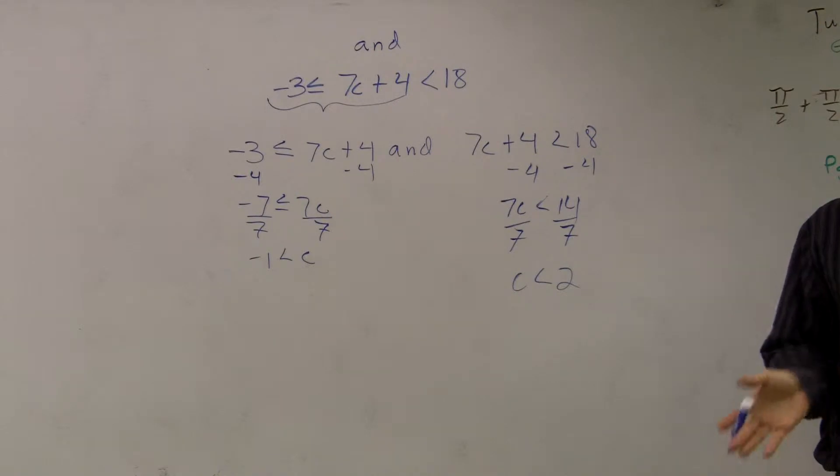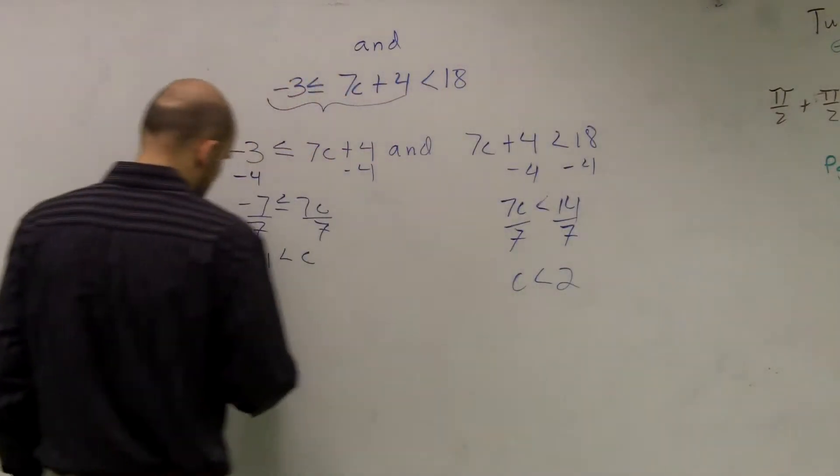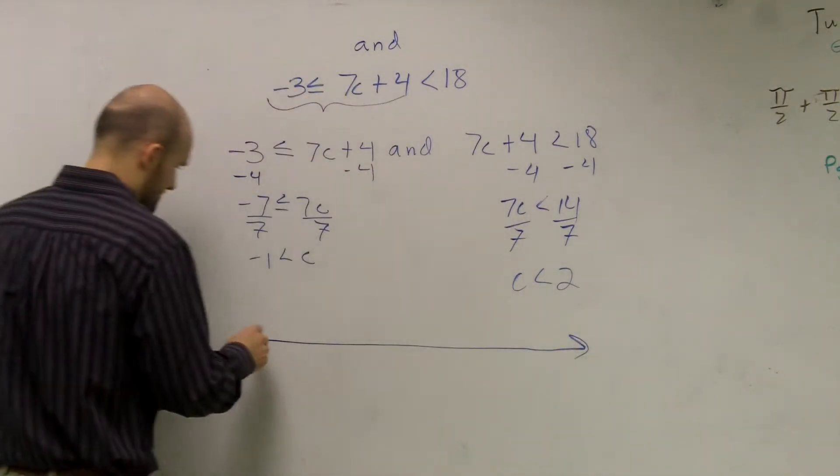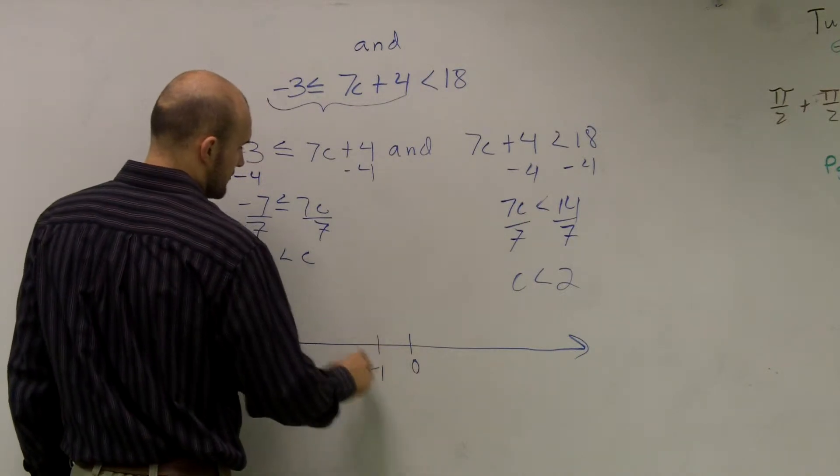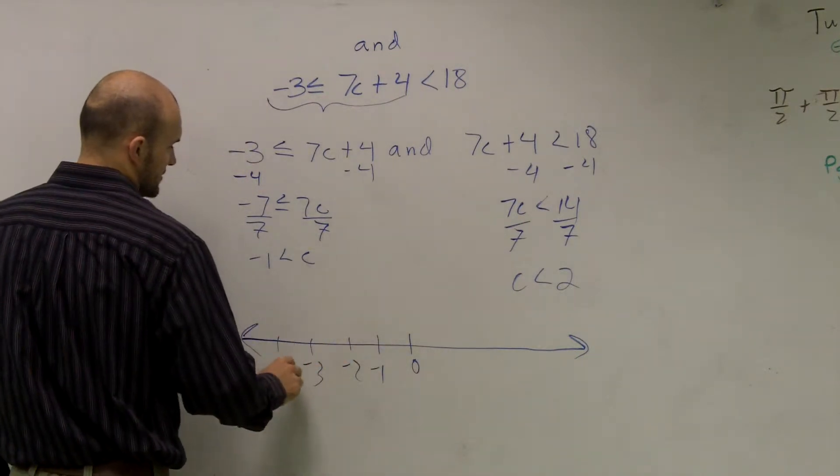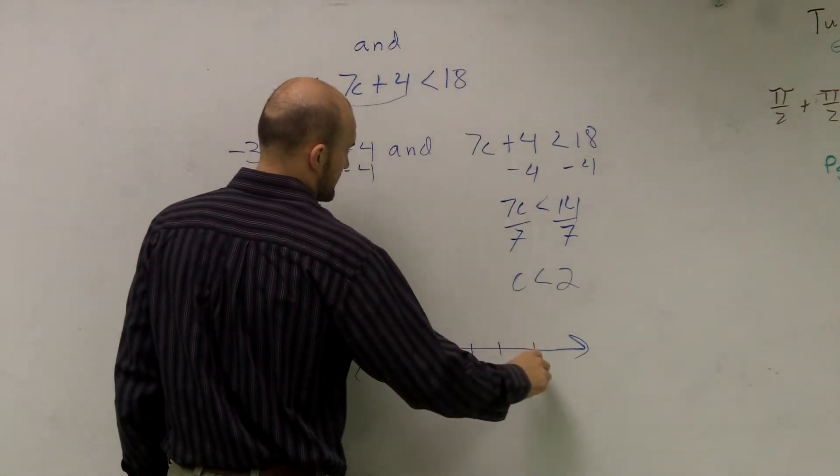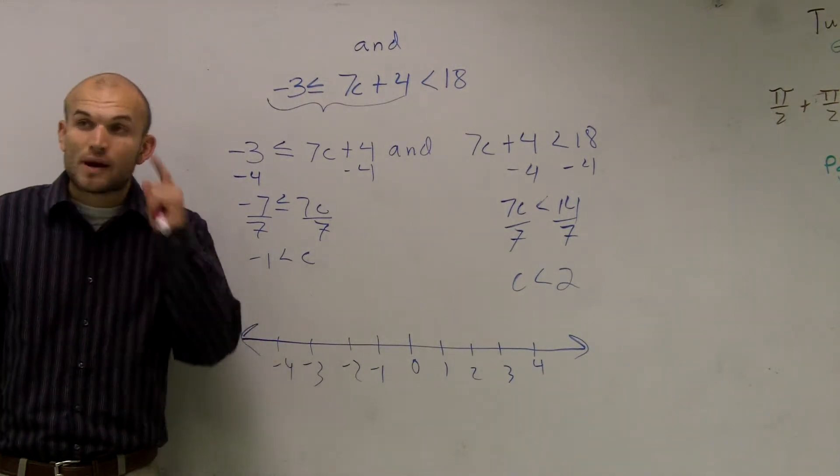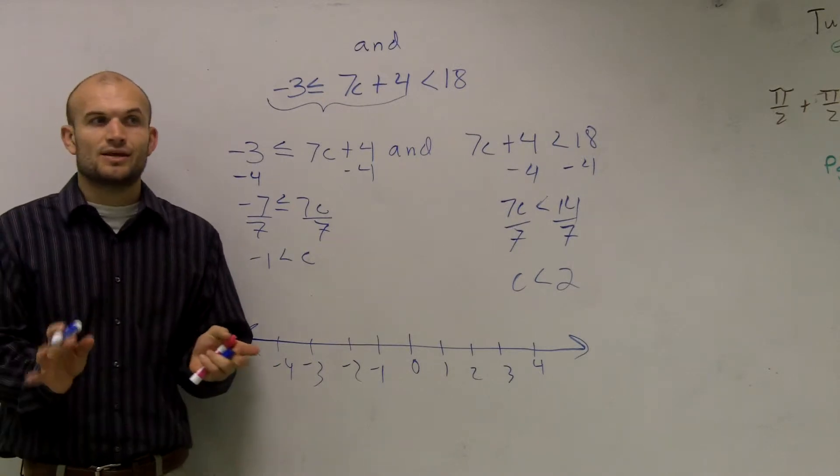Now, remember, it's an 'and,' so we're only going to talk about where they intersect. So let's take a look at it. It's a nice big number line: 0, negative 1, negative 2, negative 3, negative 4, 1, 2, 3, 4. What we want to do is I'm going to represent where both of them would be graphed, and then I'm only going to shade in where they intersect.